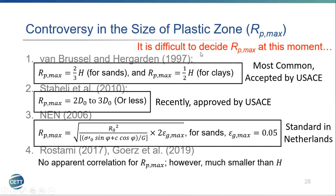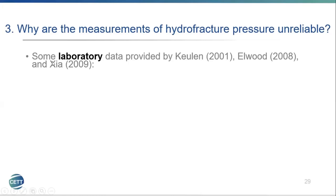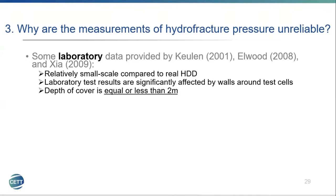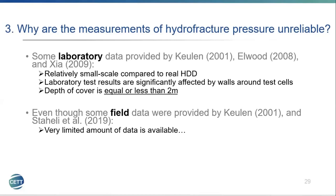For the third question — why measurements of hydrofracture pressure may be unreliable — some laboratory data was provided by Pullen, Edwood, and SIA. These tests were 2 m × 2 m × 2 m, much smaller than real HDD, and were significantly affected by wall effects. The depth of cover was equal to or less than 2 meters, much shallower than real HDD. Some field data was provided, but the available dataset was very limited, making validation difficult.